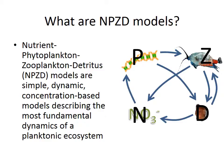We're just parameterizing how nitrogen flows through this ecosystem. It's important to keep in mind that what we're modeling here is concentrations — the concentration of phytoplankton usually in nitrogen units, the concentration of zooplankton in nitrogen units, the concentration of detritus, and the concentration of nutrients, all in nitrogen units. We're basically just figuring out how much nitrogen is in each of these compartments. We're not modeling individual organisms.